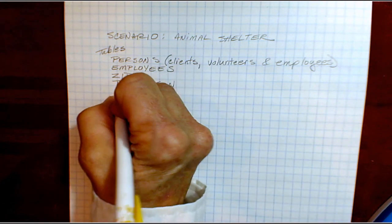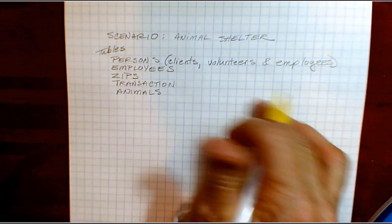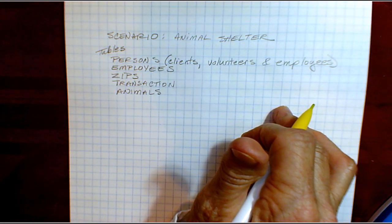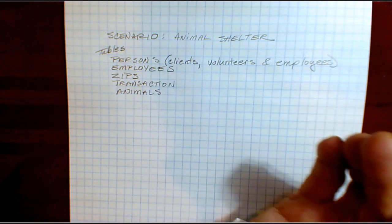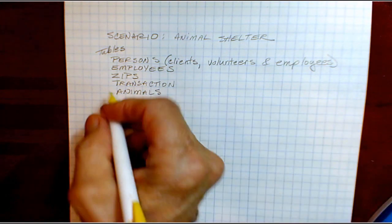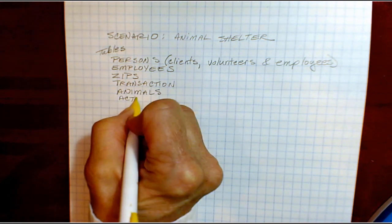Then we have animals, which during this video series we will handle dogs, but we will build the database so it accommodates additional types of animals such as cats, birds, etc. And then we will have an activities table.